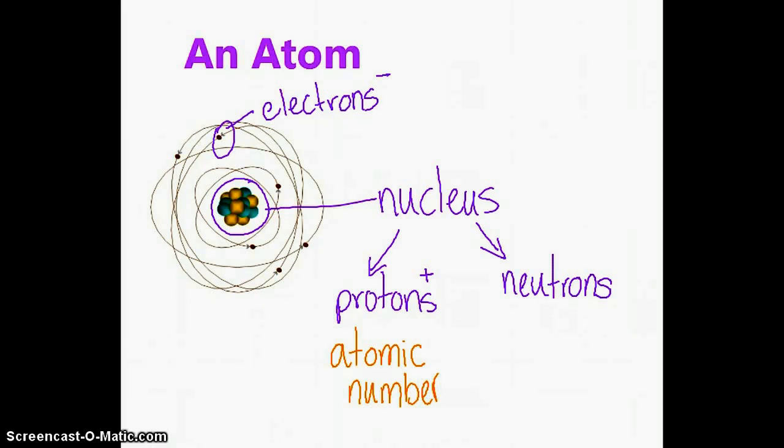Protons and neutrons are much bigger than electrons. In fact, electrons are so tiny that their mass can hardly be measured at all. The atomic mass of an atom is equal to the weight of its nucleus.